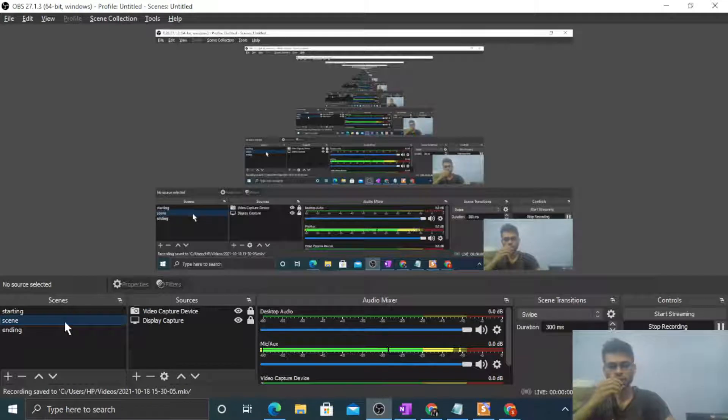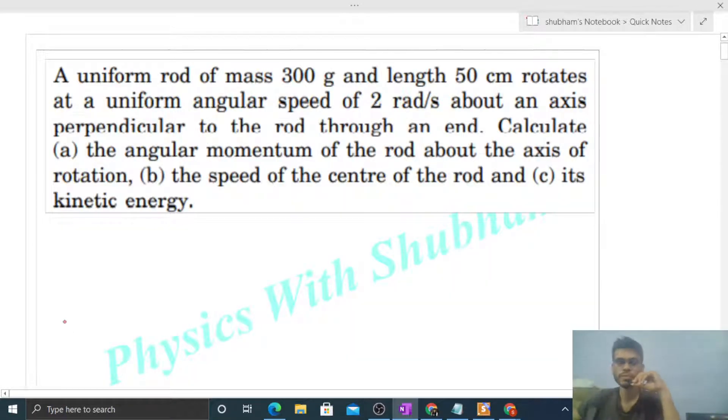Okay, hi everyone. Today let's discuss this interesting problem. It says a uniform rod of mass 300 grams and length 50 centimeters rotates at a uniform angular speed of 2 radians per second about an axis perpendicular to the rod through an end. Calculate the angular momentum of the rod about the axis of rotation.